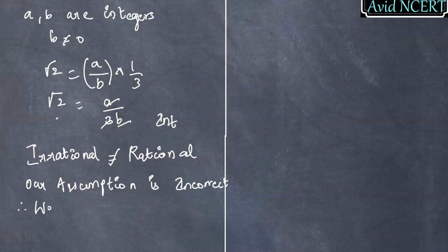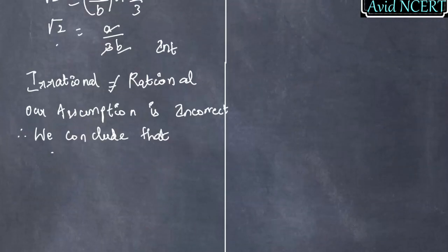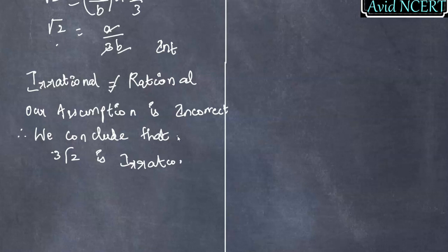So we conclude that 3√2 is Irrational. This is how this type of problem is done.